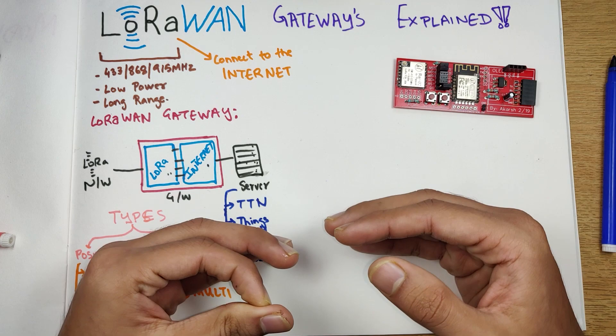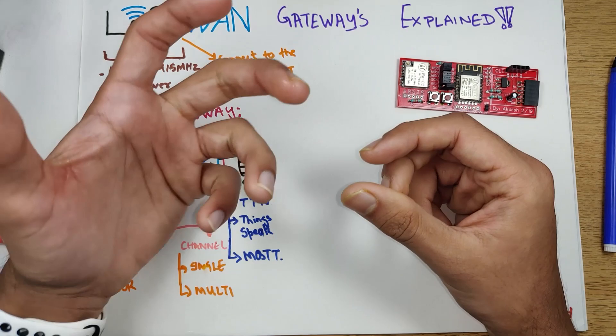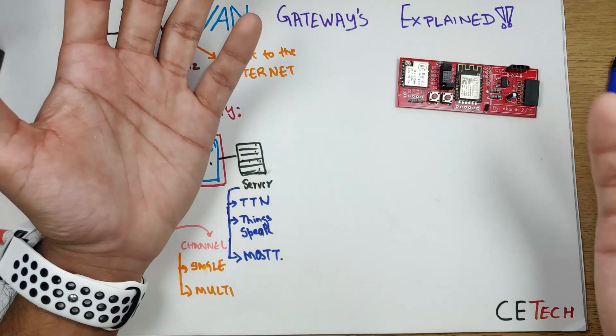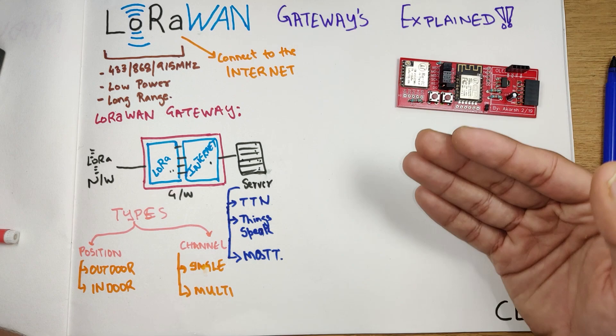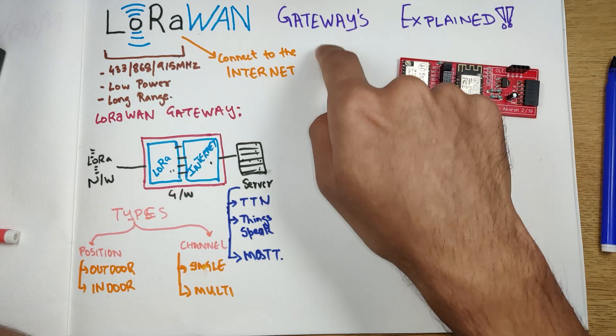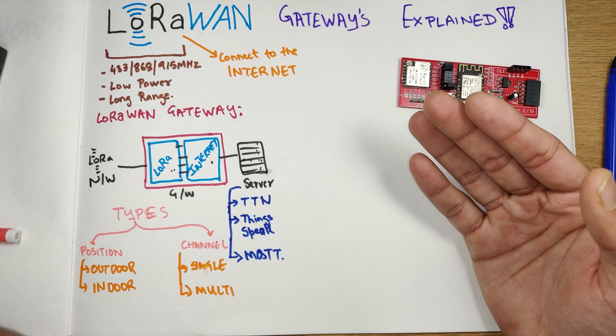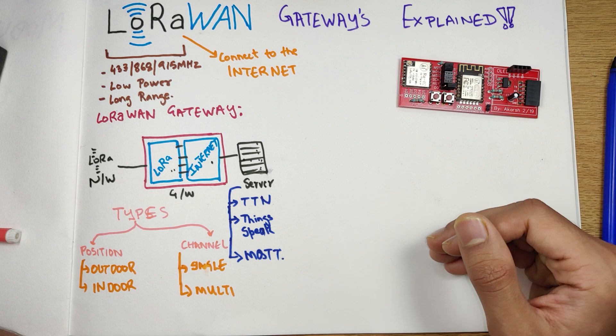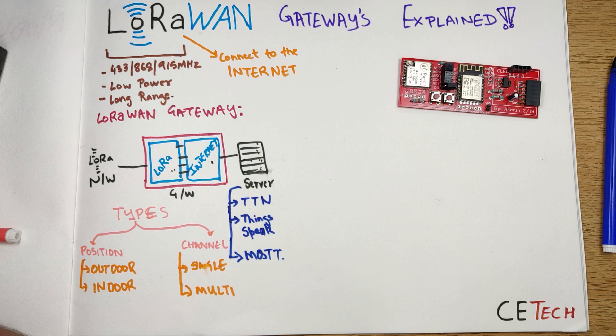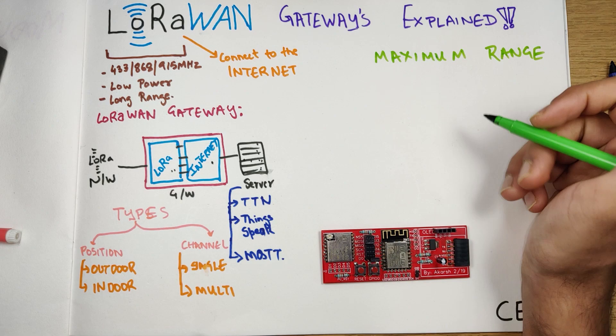So why would you need a gateway in your application? If you require to see your data not only on a local network but on a wide area network — for example, you want to see data reported by your LoRa nodes on your smartphone or computer — you need to transfer that data to the internet, and for that you need a LoRa-based gateway. Simply ask yourself: do you need to see your data on the internet? If yes, you need a gateway. If not, you're good to go.